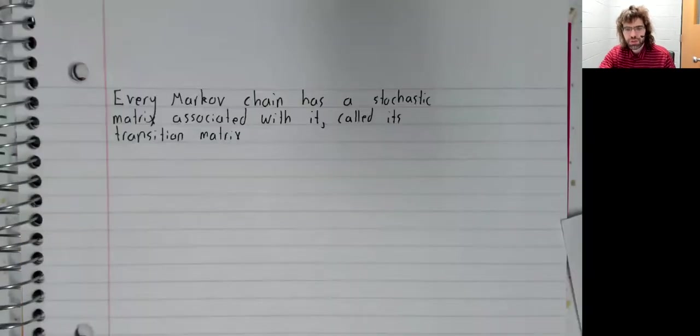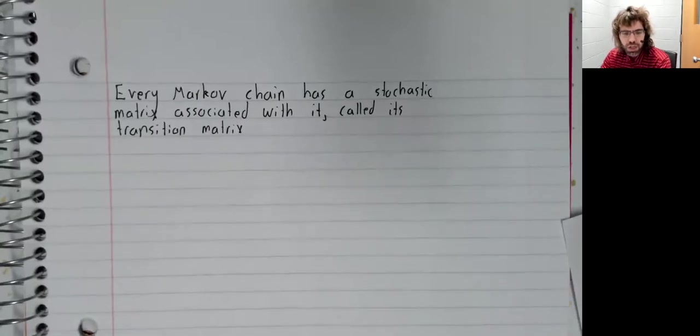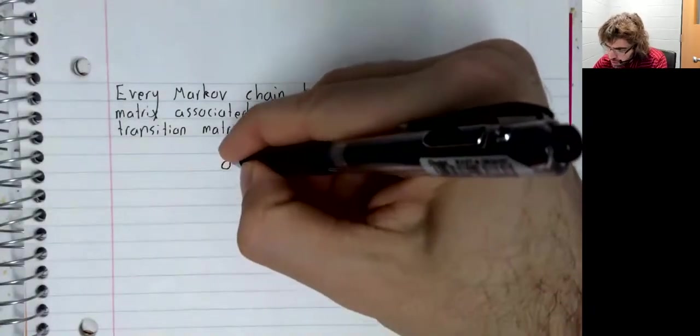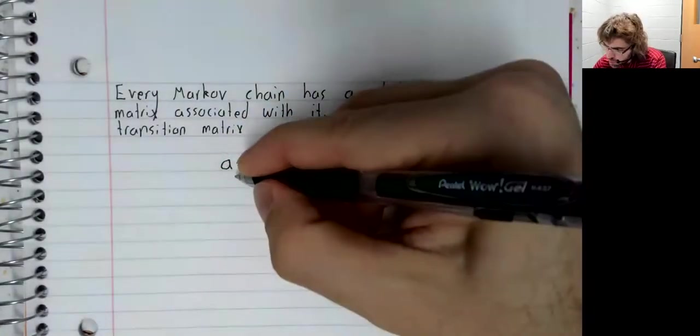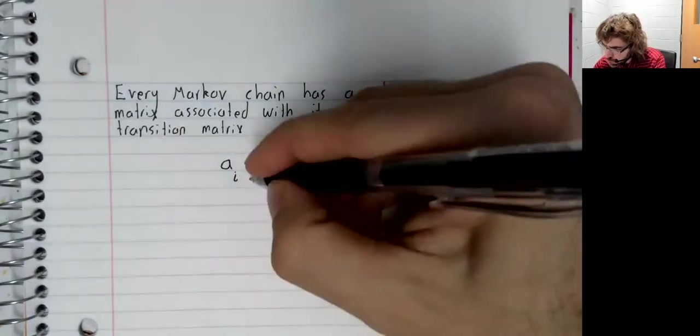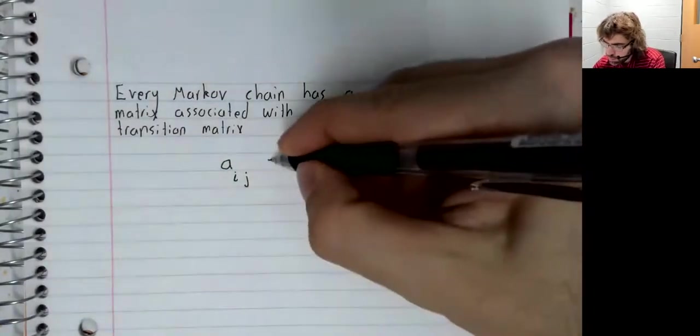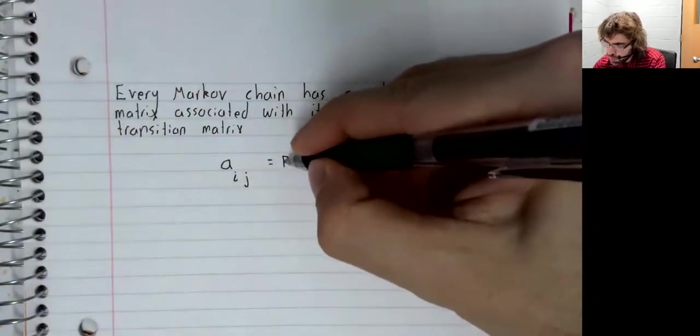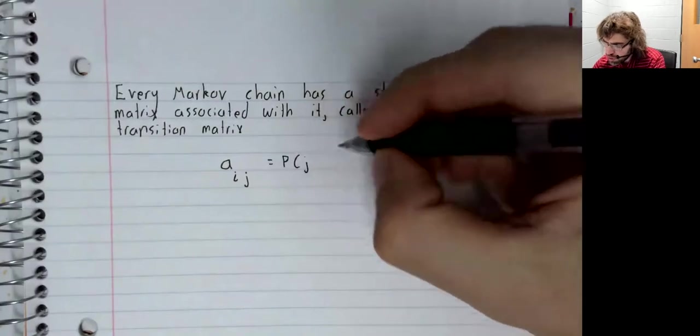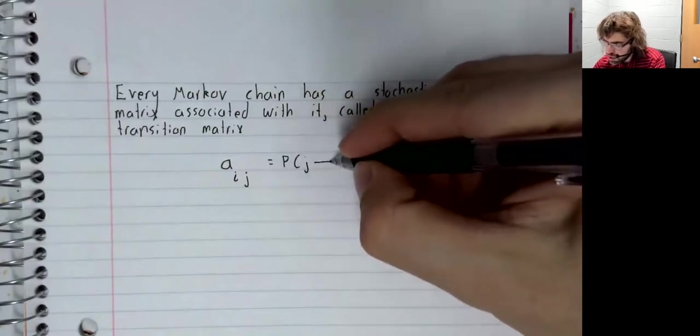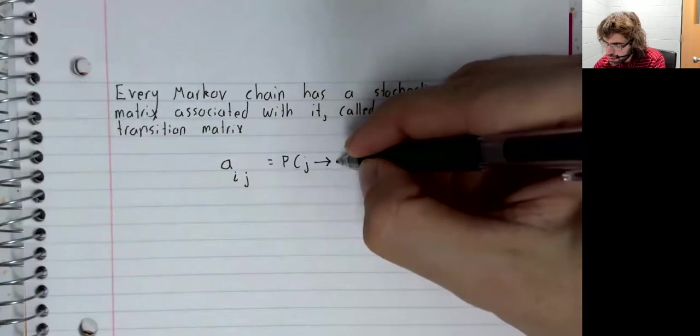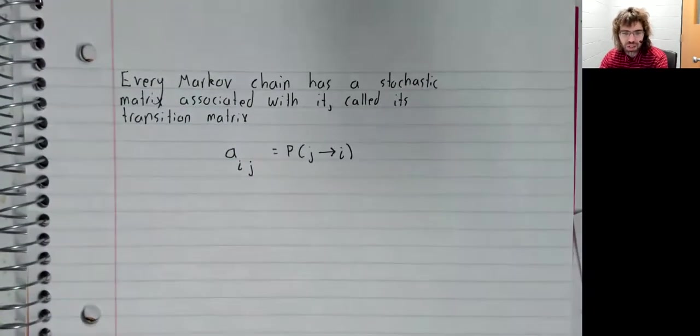Every Markov chain has a stochastic matrix associated with it called its transition matrix. The entry in the ith row, jth column is the probability of transitioning from state j to state i.